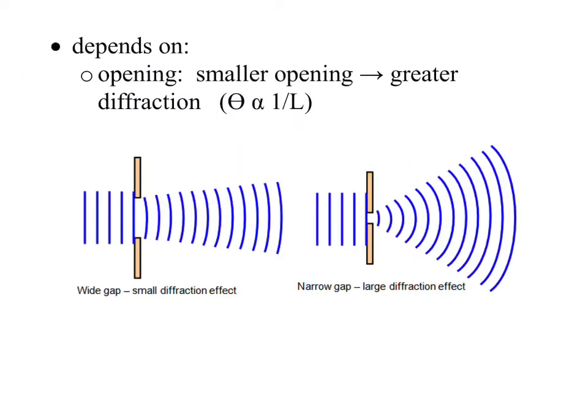So of course, how much the wave bends depends on the smaller opening. So smaller opening, greater diffraction. That's what you got to know. So this is theta, that's just the angle at which it's diffracting, is proportional to one divided by L. That's the distance between the gap.